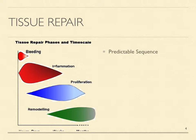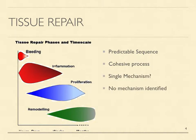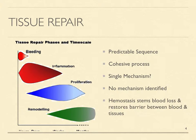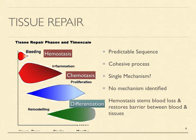Tissue repair proceeds in a predictable sequence of bleeding, hemostasis, inflammation, chemotaxis, cell proliferation, cell differentiation, and remodeling. Each of these phases merges smoothly into the next, which implies the presence of a cohesive process controlled by a single mechanism — but no such mechanism has previously been described.